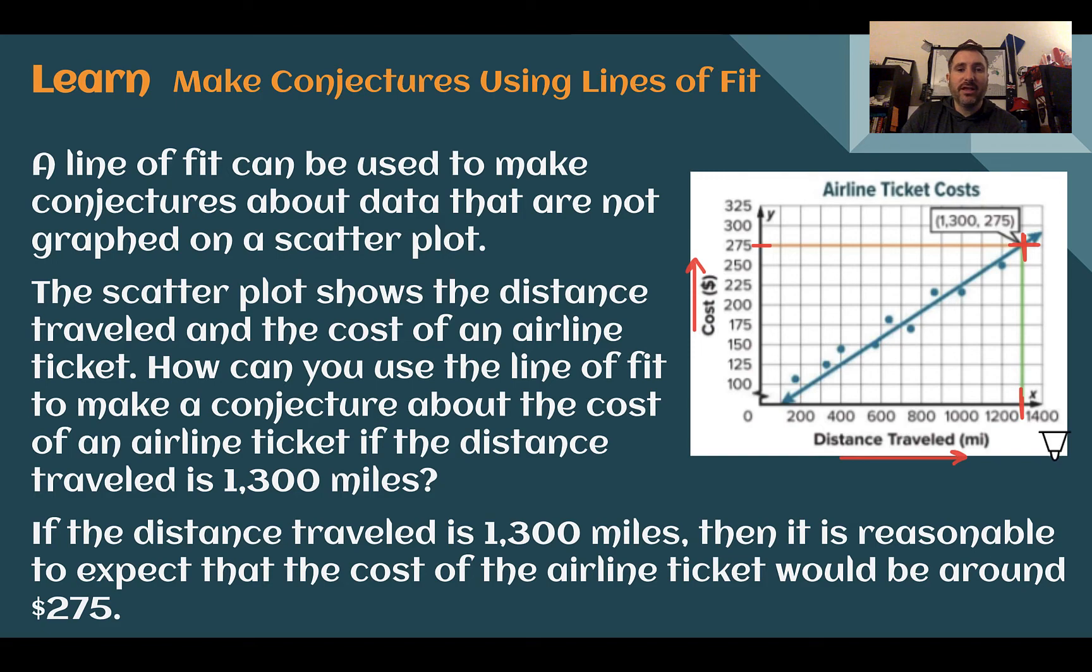So if you had a flight that was going to travel 1300 miles, it would be reasonable to expect it would be about $275. We could use this for other points on the line. Let's say I wanted to know 700. I could go up to the line. What's my y value at that time? 175. So a 700 mile trip should cost about $175.